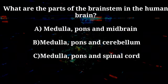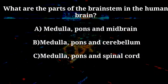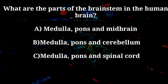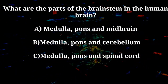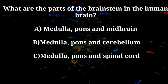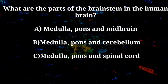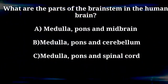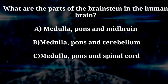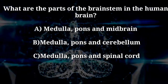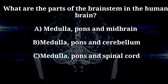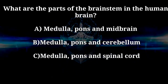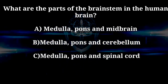What are the parts of the brainstem in the human brain? A. Medulla, pons and midbrain. B. Medulla, pons and cerebellum. C. Medulla, pons and spinal cord.